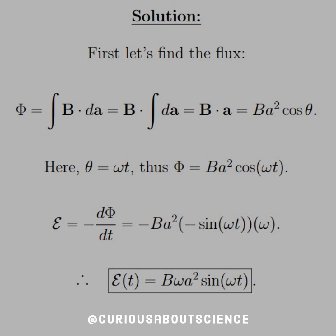So if we're trying to find the EMF as a function of t, just take the negative derivative of this, and we see that we get negative B A squared times negative sine, because cosine goes to negative sine, omega t — using the chain rule, you get omega — and simplifying it down, the EMF is equal to B omega A squared sine omega t. You've probably seen this before in the alternating current sections of earlier books, but here's where we get it from.